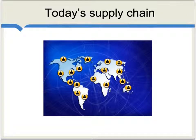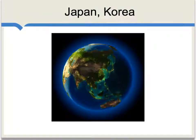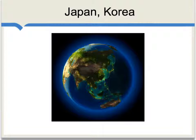Today's international supply chain is often scattered across many countries around the entire world. One way of thinking about the older model of industrialization was that it was about building a self-contained, integrated supply chain within a single country. This is what both Japan and South Korea largely succeeded in doing — building powerful manufacturing sectors which in many cases used only a minimum of foreign content. Most of the production and assembly process would take place in Japan or South Korea.